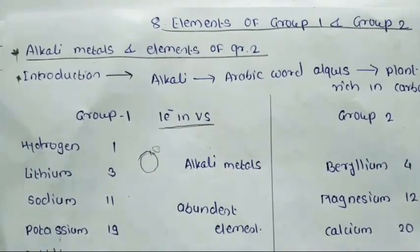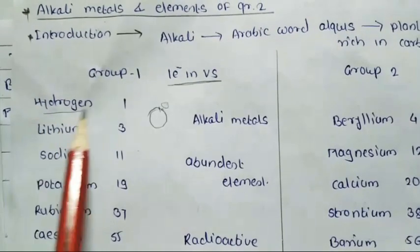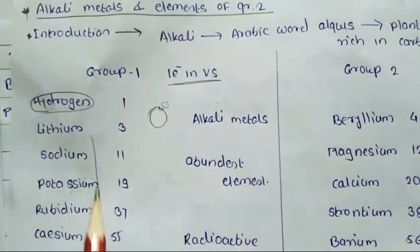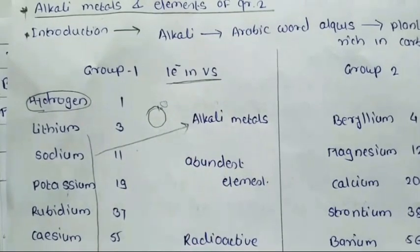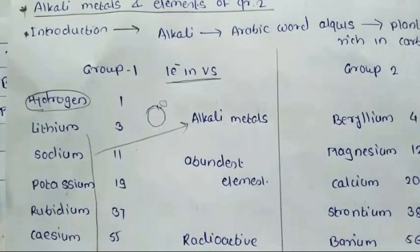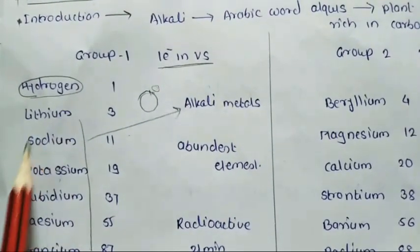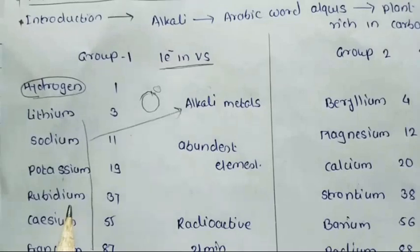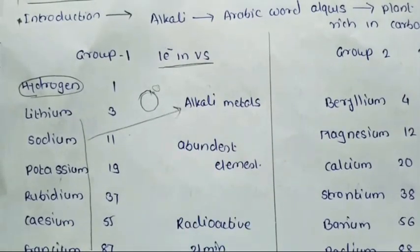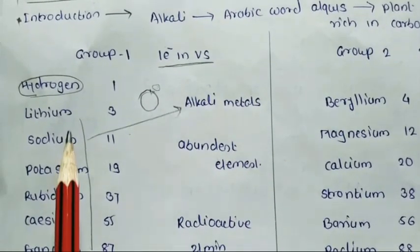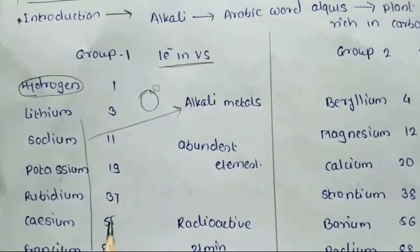Except hydrogen, one electron is present in the valence shell of each element. Except hydrogen, these elements are called alkali metals. So, first group means hydrogen, sodium — these elements are alkali metals.